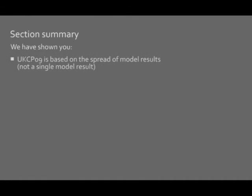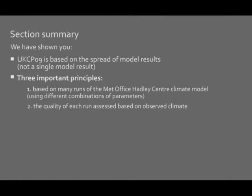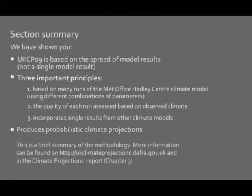In this section we've shown how the modeling for UKCP09 has been developed. We've followed three important principles: the first being that UKCP09 is based on a spread of model results and not just a single model run. The second principle is that the quality of each model run has been assessed based on the observed climate. And finally we've incorporated single results from other climate models, and this has produced what we now call the UK climate projections.